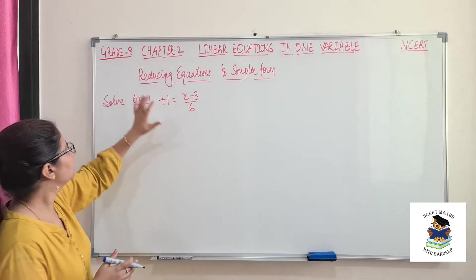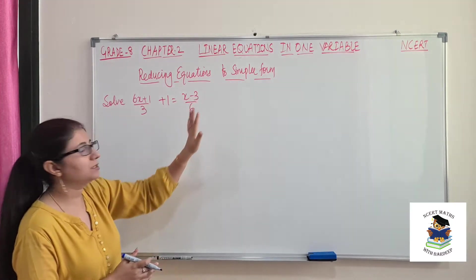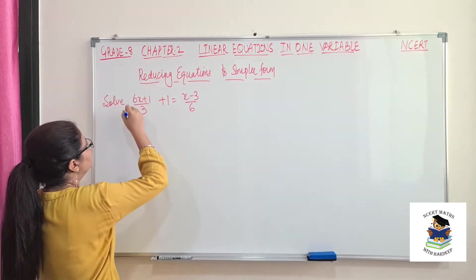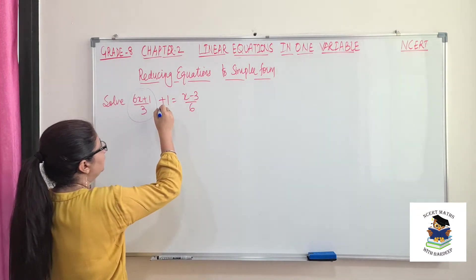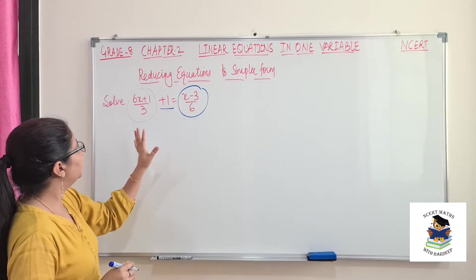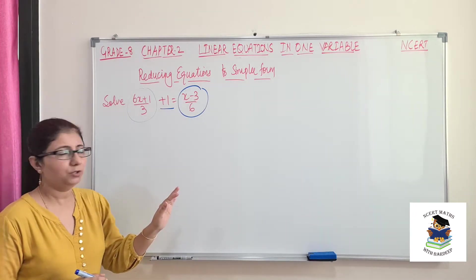Here it is (6x + 1)/3 + 1 = (x - 3)/6. So that means this is our one term, this is the second one, and this is the right hand side. But two of them are having denominators and one is not having the denominator.